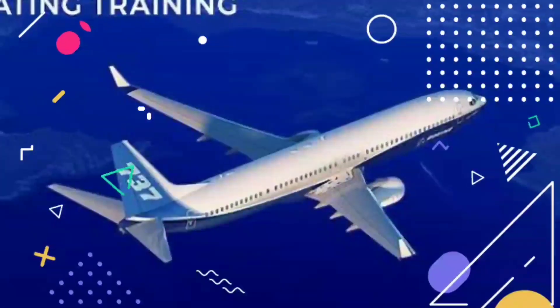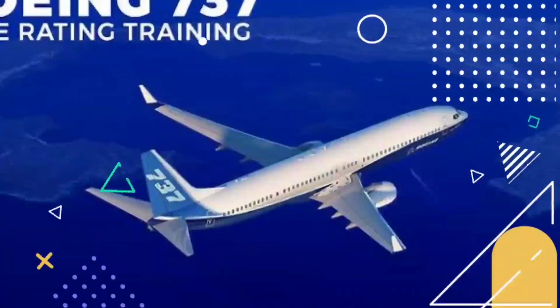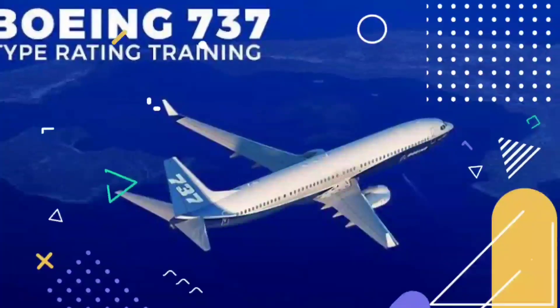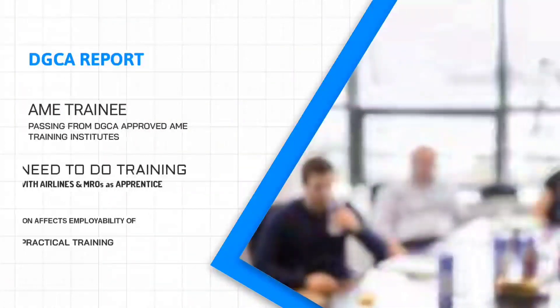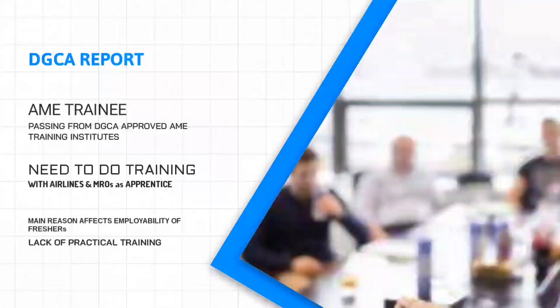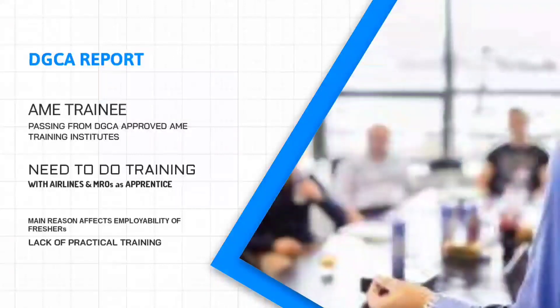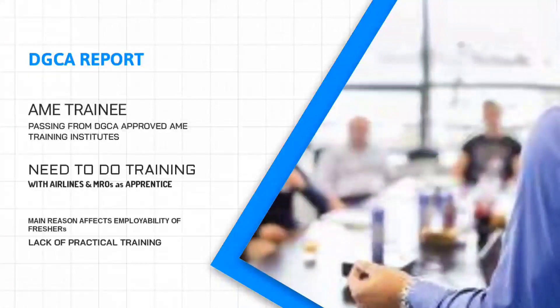For those who don't know type rating, type rating is training on a particular aircraft to get a license. For example, if you want a 737 NG license, you need to do training on that aircraft. DGCA further added that AME trainees passing out from DGCA-approved AME training institutes get no effective practical training during the course, and that's why they must do training with airlines and MROs as apprentices. The main reason affecting the employability of trainees is the lack of practical training.